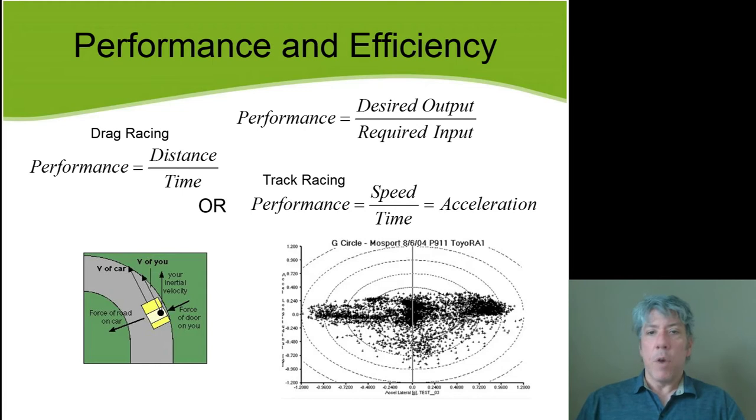Professional racing teams know this. That's why they make something called GG plots. A GG plot is just, you might think of a G as a G of acceleration. In fact, that's what this plot is measuring.